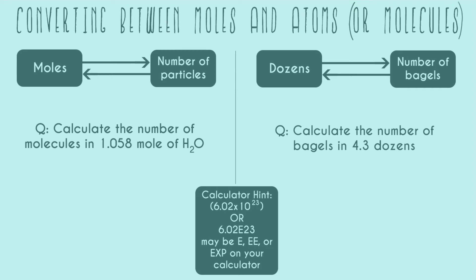In this video, I'm going to go over how to convert between moles and atoms or molecules. For this whole video, I'm going to be using the analogy of a dozen. A mole is like a dozen — a dozen just exists because it's easier to say 'a couple dozen' than to say 24 things. It's the same with moles: it's easier to say 'a few moles' than to say the actual number of atoms or molecules, which would most likely be a really high number.